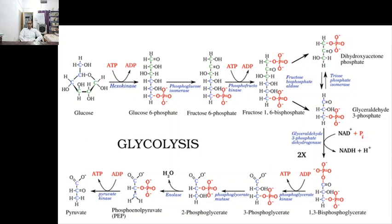Coming to the topic directly — the glycolytic pathway. Glycolysis is a series of metabolic processes by which one molecule of glucose is catabolized into two molecules of pyruvate with a net gain of 2 ATP. The equation: one glucose molecule plus two inorganic phosphates plus two ADP plus two NAD+ gives two pyruvate, two ATP, two NADH, two protons, and two molecules of water.